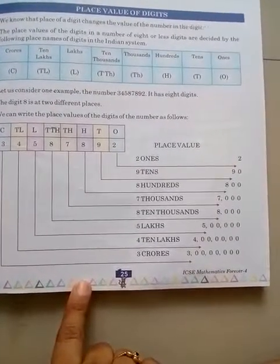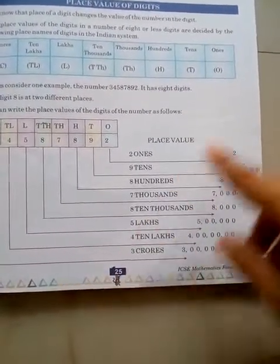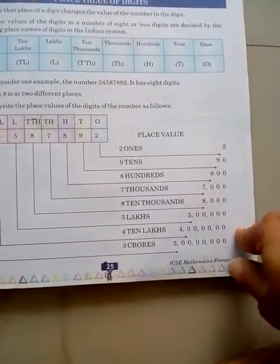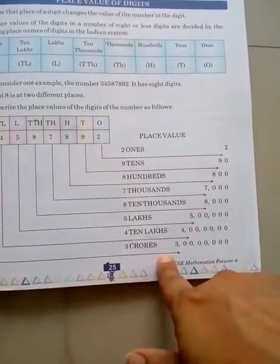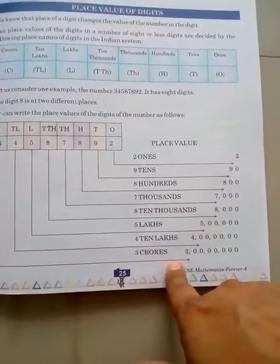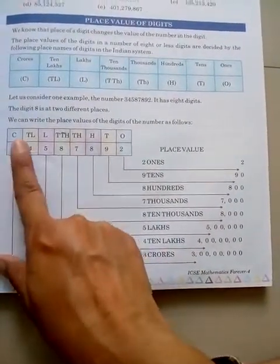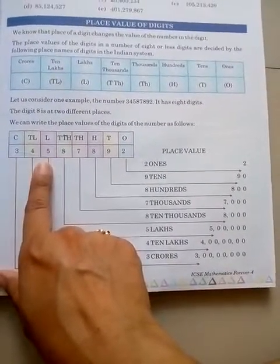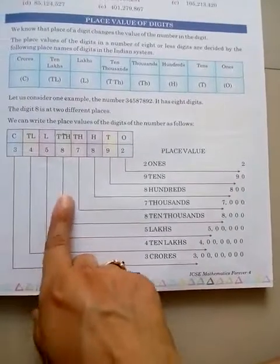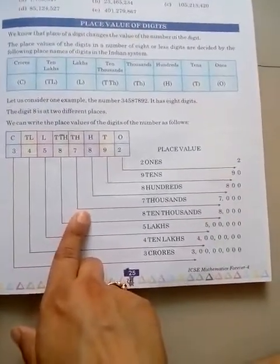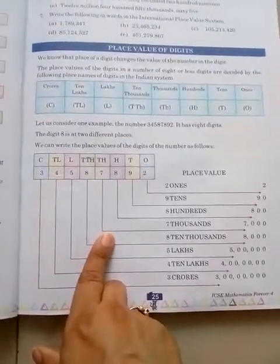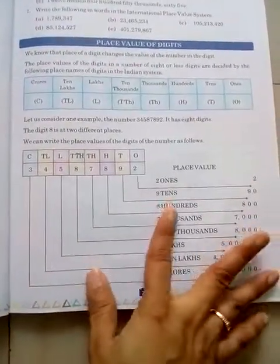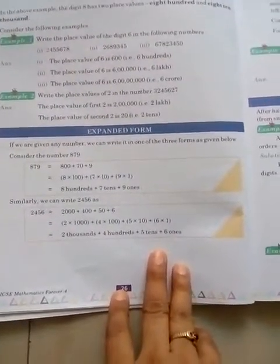Each and every number — it will increase in zeros, and they rightly write the place value. As you know, the face value remains the same as the digit — like the face value of three is three, four is four, five is five, eight is eight. Whatever the place value of the digit in the given number, that does not affect the face value. It will always remain the same as the digit given in the number.